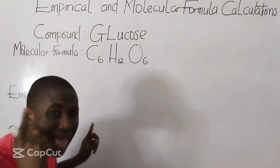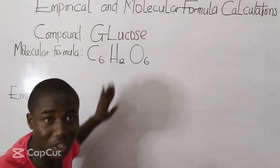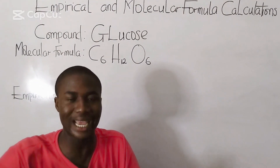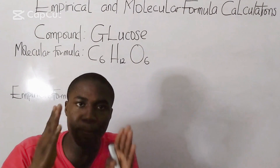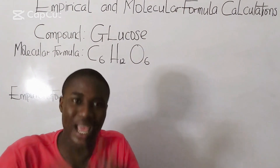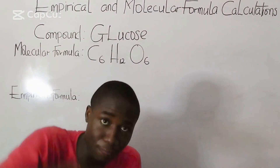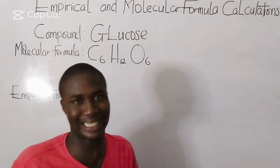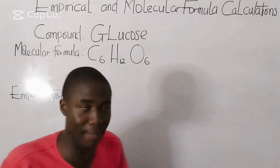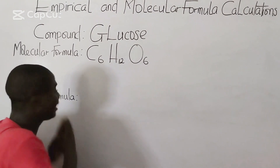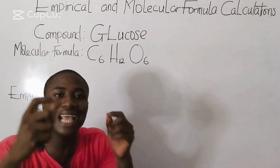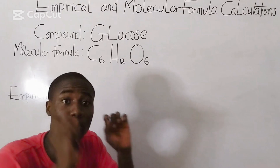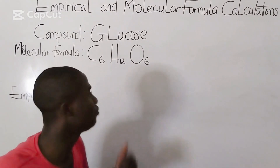Now, what is the empirical formula of this compound, glucose? The empirical formula of a compound is the simplest form that particular compound can exist. Before we write the empirical formula of glucose, let us try to break down this compound to its simplest form.